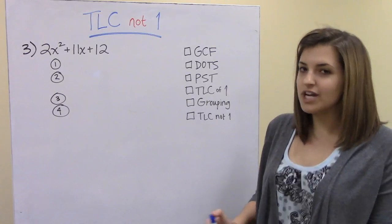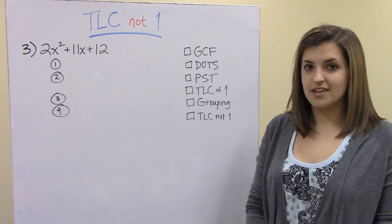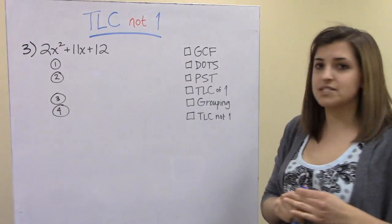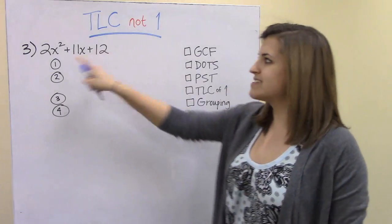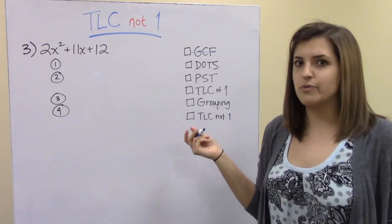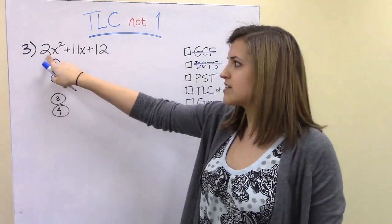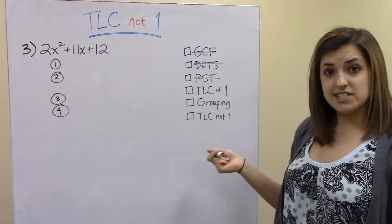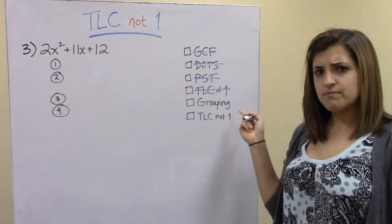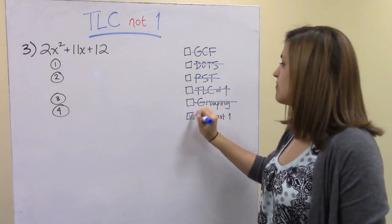In this example, I want to point out that I've added our checklist on the side. We need to go through all of these to see which kind we're factoring. For 2x² + 11x + 12: it's not a greatest common factor, not a difference of two squares, not a perfect square trinomial since 2x² and 12 are not perfect squares, not a trinomial with leading coefficient of 1 since the leading coefficient is 2, and not a grouping problem. So it must be a trinomial with a leading coefficient not equal to 1.